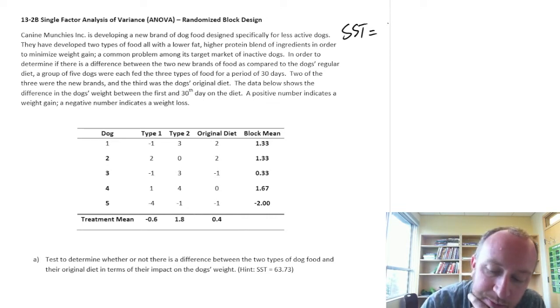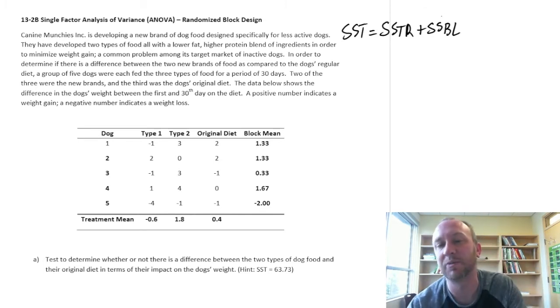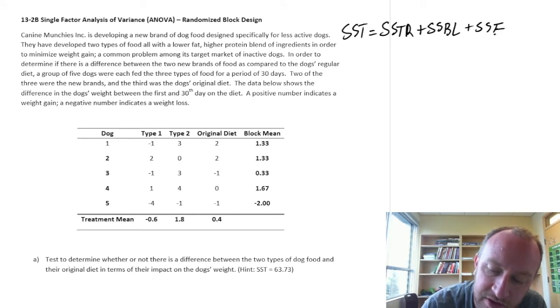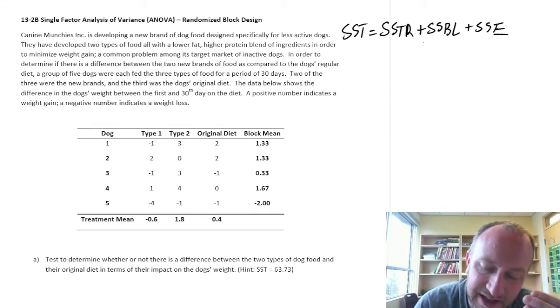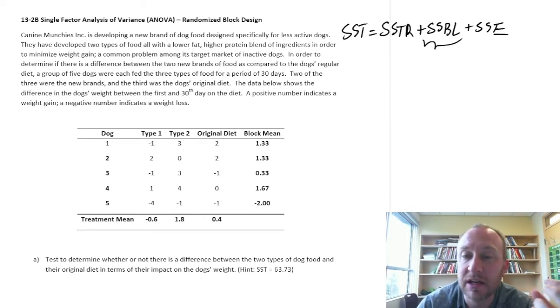So with a randomized block, we are looking at that source of variation that can be attributed to our treatments, that which can be attributed to heterogeneity or differences between our observational units, those things that we are observing, those things that we are getting the data from. Plus, of course, random fluctuation, random variation in a data set. So basically what we're doing is we are accounting for, or we are removing one source of variation, effectively taking it out of the calculation.